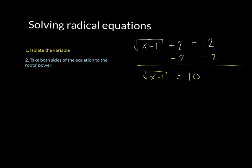Step 2 is to take both sides of the equation to the root's power. So since I have a square root in my equation, I'm going to take both sides to that power, to the squared power. That eliminates the radical. So the square root of x minus 1 squared is x minus 1. 10 squared is 100.